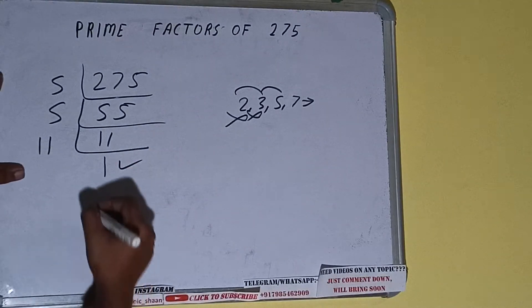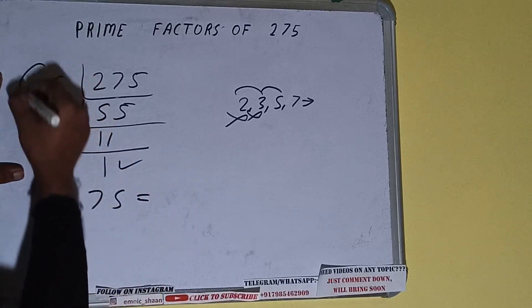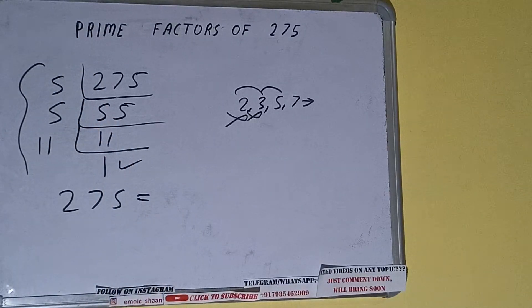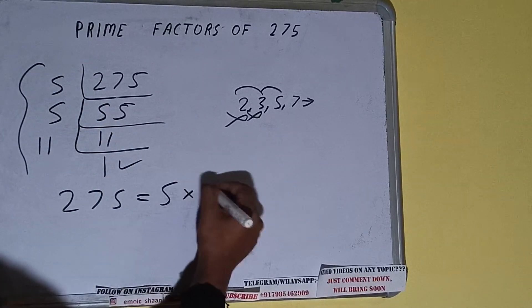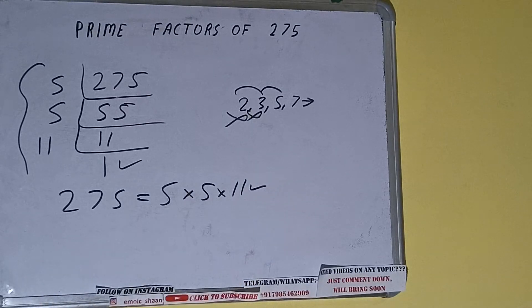And do one last thing, that is prime factor of 275 is equal to multiply whatever we have on the left-hand side, that is 5 × 5 × 11. That will be the answer. So this is all about prime factors of 275.